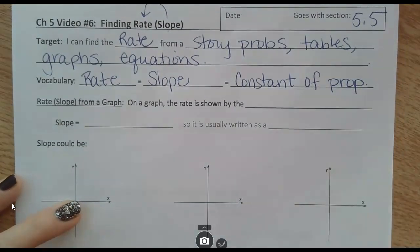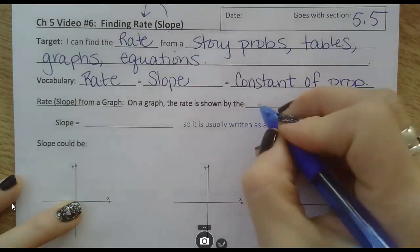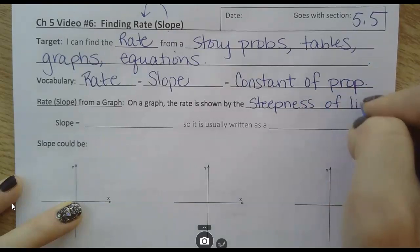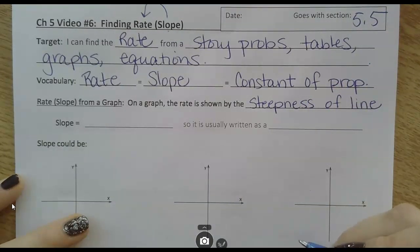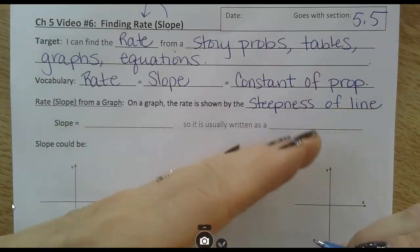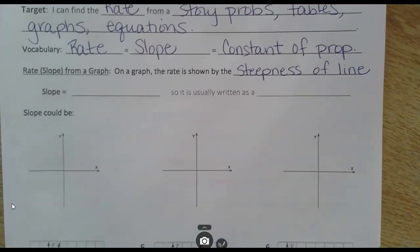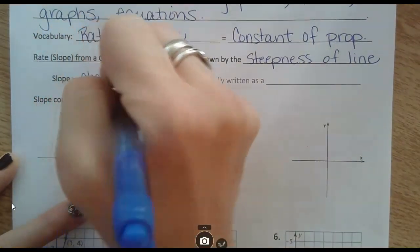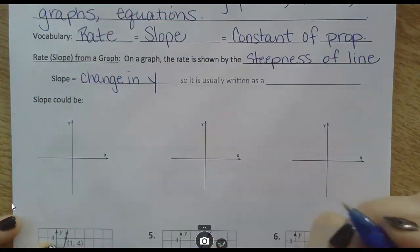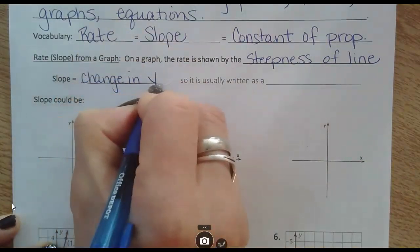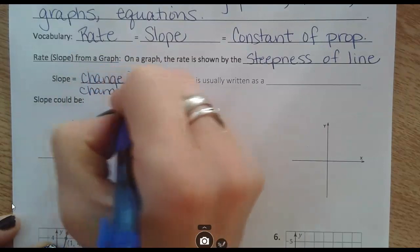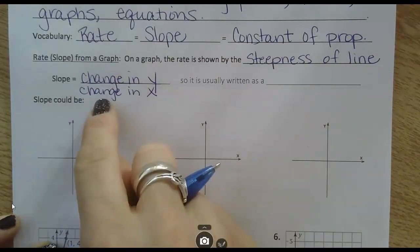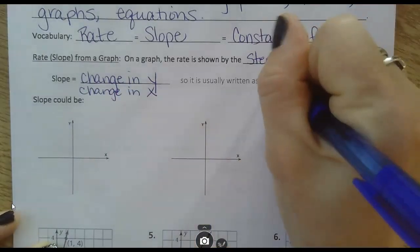Let's start with finding the rate or the slope from a graph. On a graph, the rate is shown by the steepness of the line. Think about a graph of a line - it could be a steep graph, or it could be a not as steep graph. There's a formula that we use to find it: the change in y over the change in x. This gives us a fraction. Our slope, when we're looking at a graph, is very often written as a fraction.